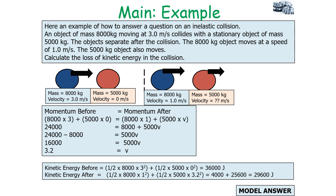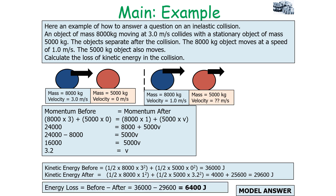We can now work out the kinetic energy before and after using ½mv² for each moving object. Kinetic energy before = 360,000 J; kinetic energy afterwards = 29,600 J. The total energy loss is kinetic energy before minus kinetic energy afterwards: 360,000 − 29,600 = 6,400 J lost in this inelastic collision. That energy has been dissipated to the internal energy of the surroundings or has gone into deforming the objects.